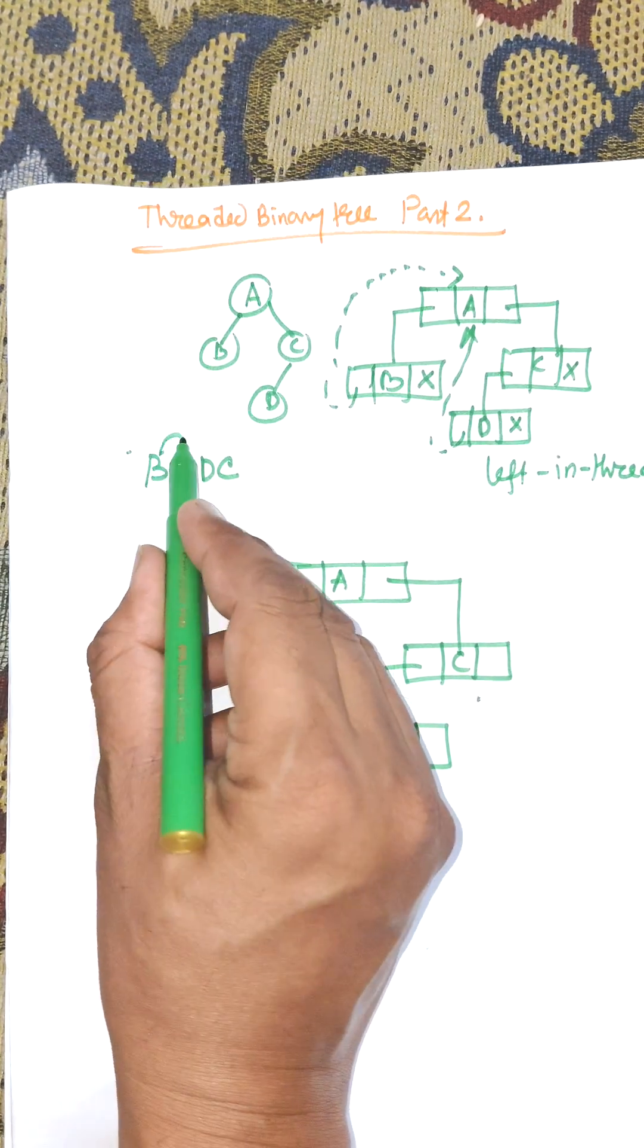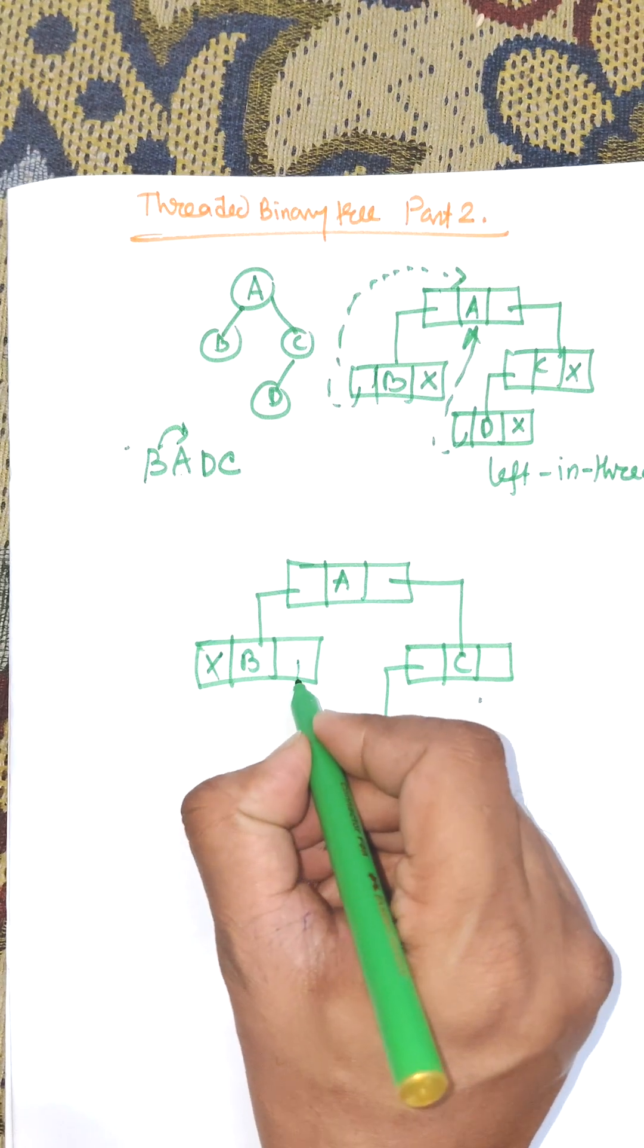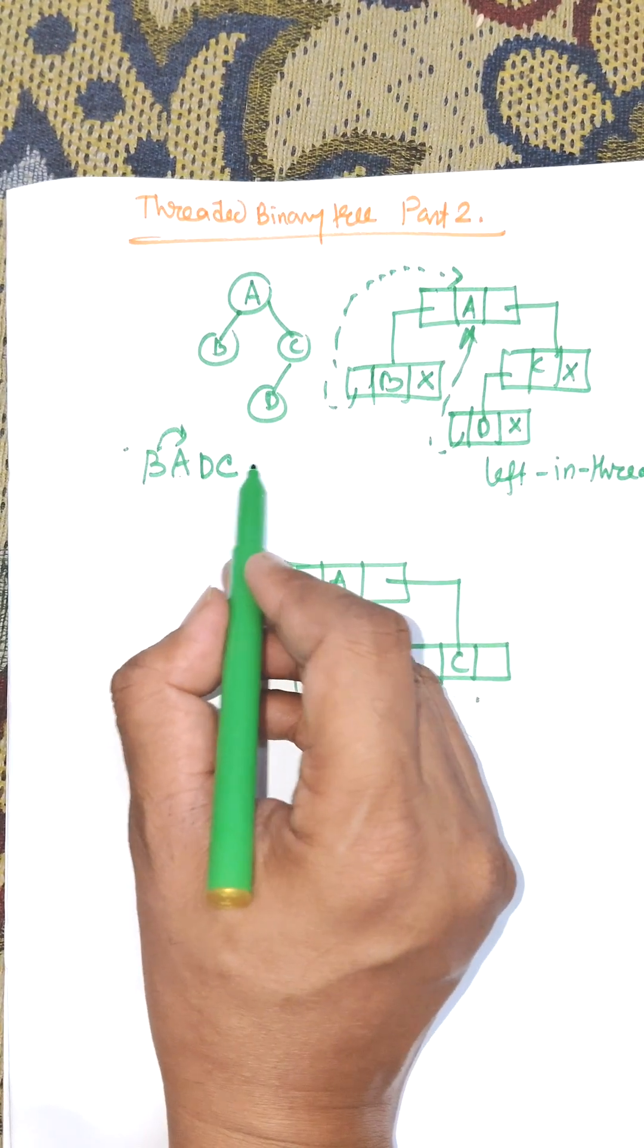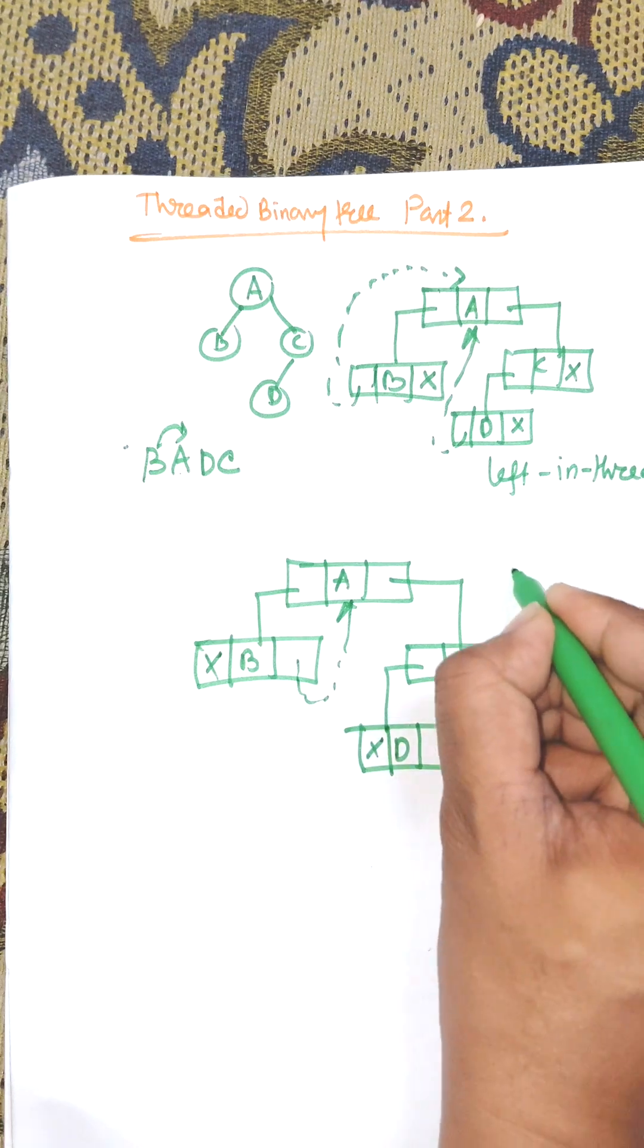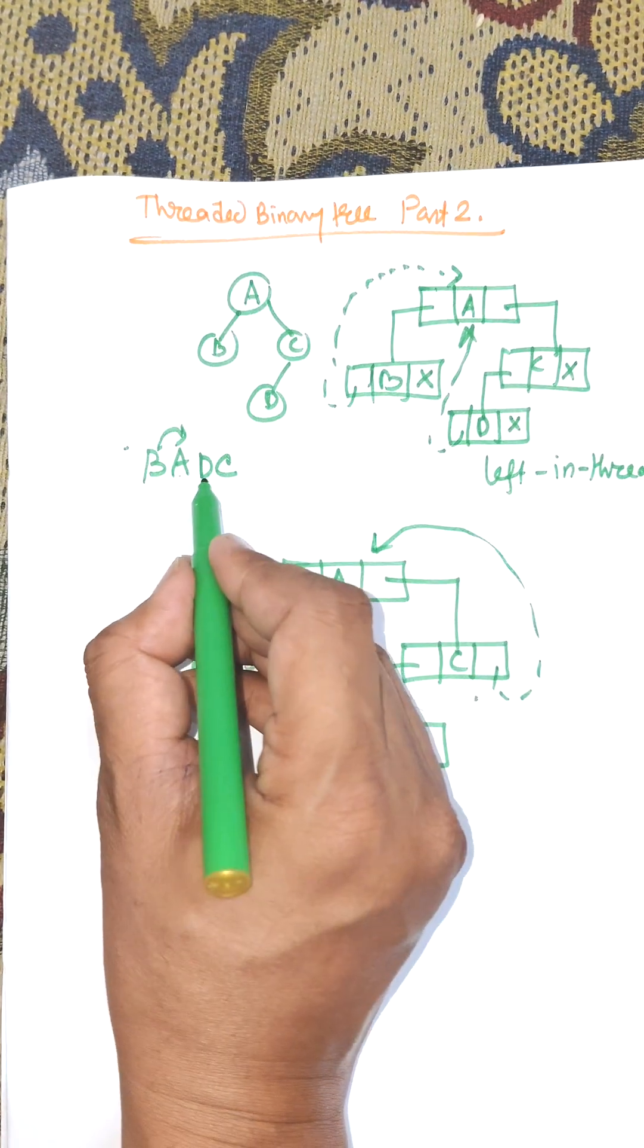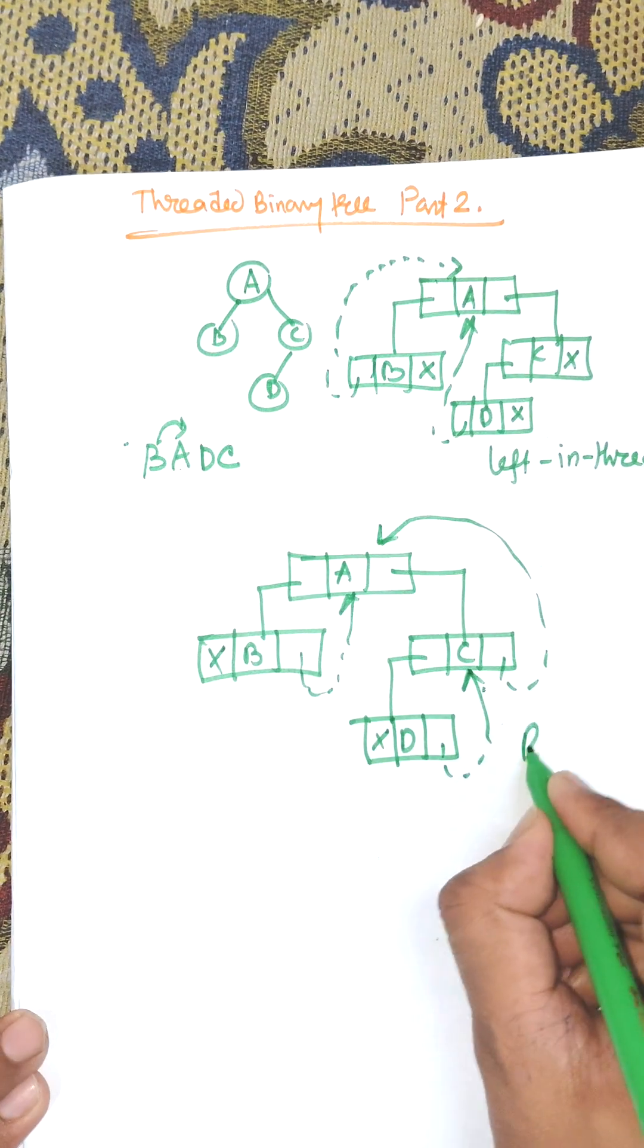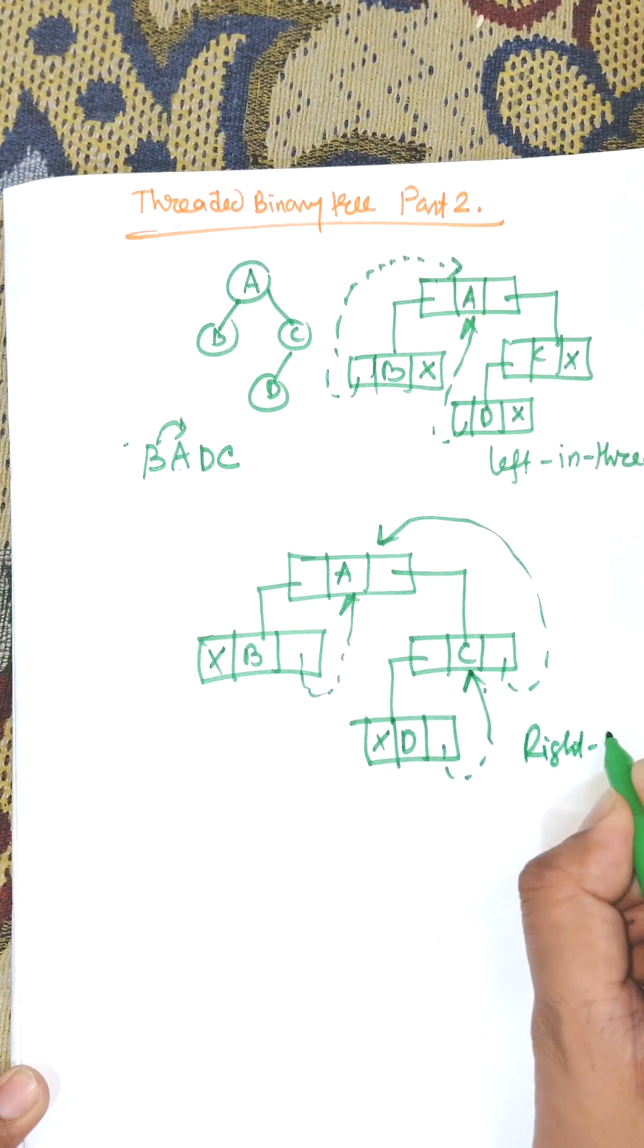The right of B points to A, so it stores the information of A. The right of C points to the root, and the right of D points to C. This is known as right-in threaded binary tree.